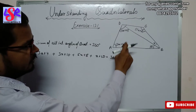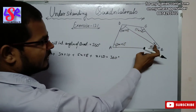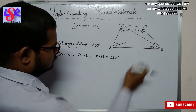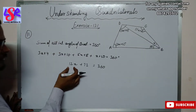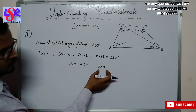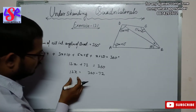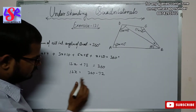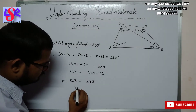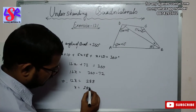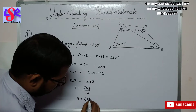We have taken 3x plus 4 from here, 3x plus 10 from here, 5x plus 8 from here, and x plus 50 from these two. Solving this, we get 12x plus 72 equals 360, so 12x equals 360 minus 72, that is 12x equals 288, and x equals 288 divided by 12, which is x equals 24 degrees.